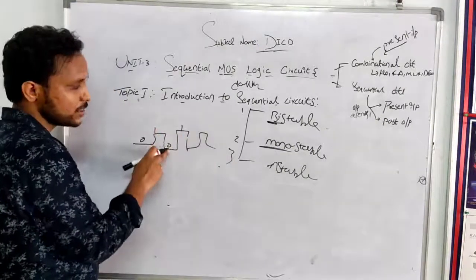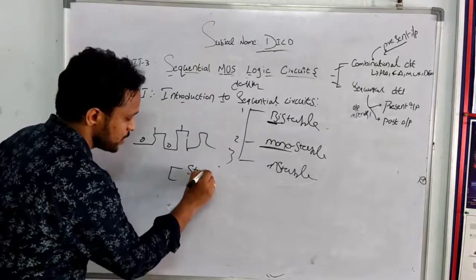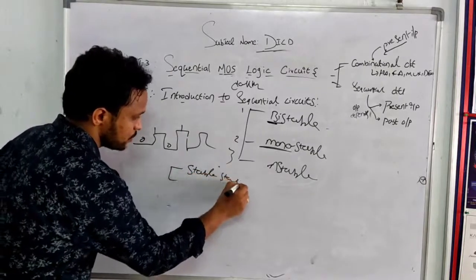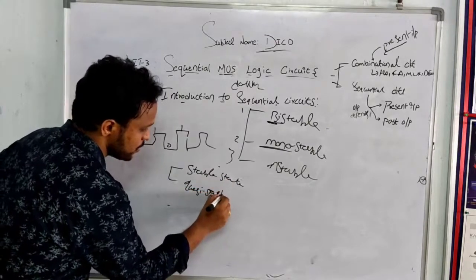These are the zero state, one state, zero state, one state. Stable state, quasi-stable state.